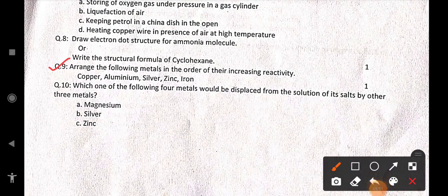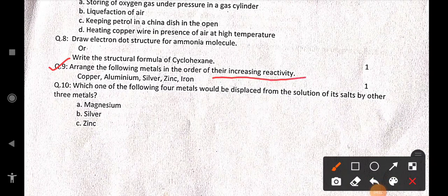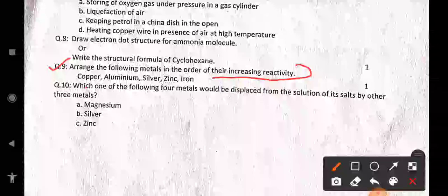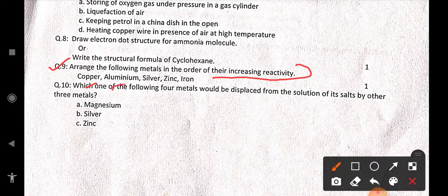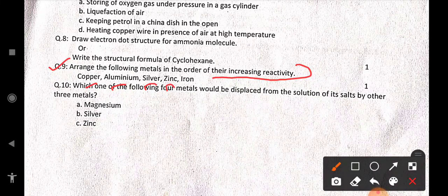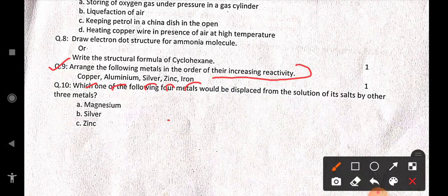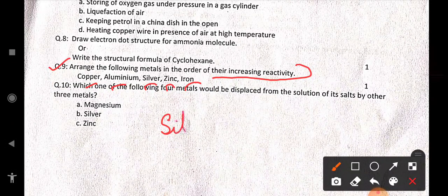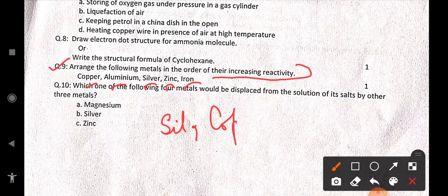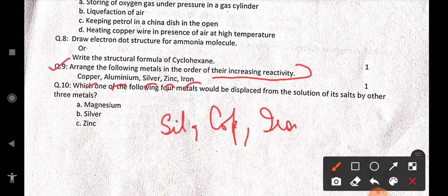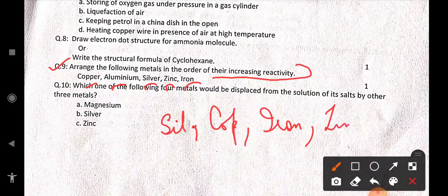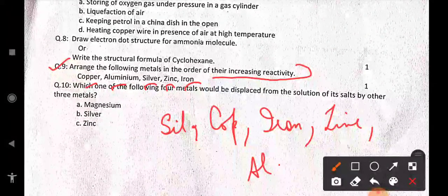Arrange the following metals in the order of their increasing reactivity. And the metals which are given here are Copper, Aluminium, Silver, Zinc and Iron. So how do we keep them in increasing order? So first of all silver, then copper, then iron, then zinc, then Aluminium.